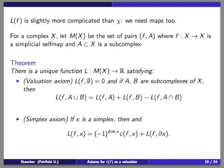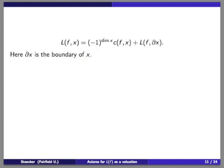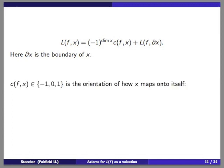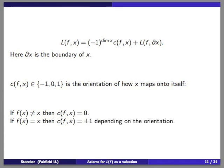The normalization property involves the boundary of x, denoted ∂x, which is a subcomplex. The value c is either minus one, zero, or one, and depends on the orientation of how f maps x onto itself. If f is a simplicial map and f(x) is not x, we define c to be zero. If f(x) is x, then c is plus or minus one depending on orientation. The formula gives minus one to the power of the dimension of x, times c, plus the Lefschetz number on the boundary.